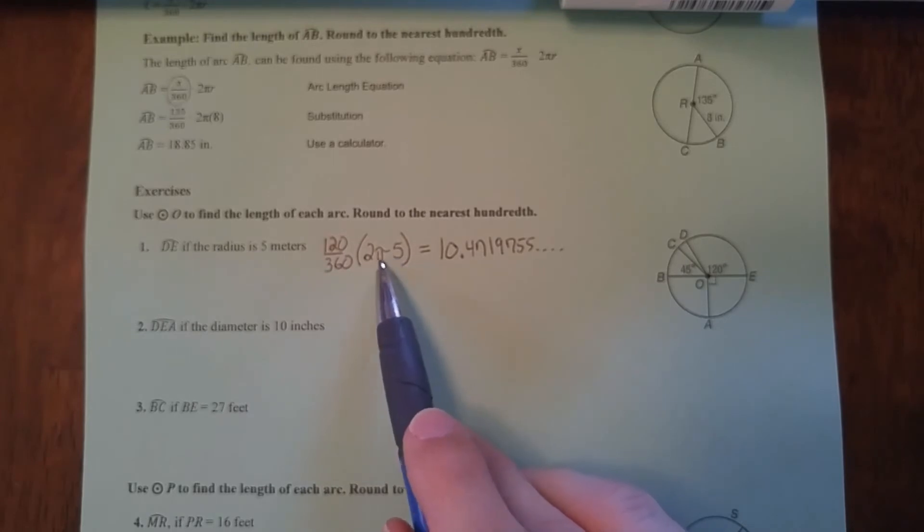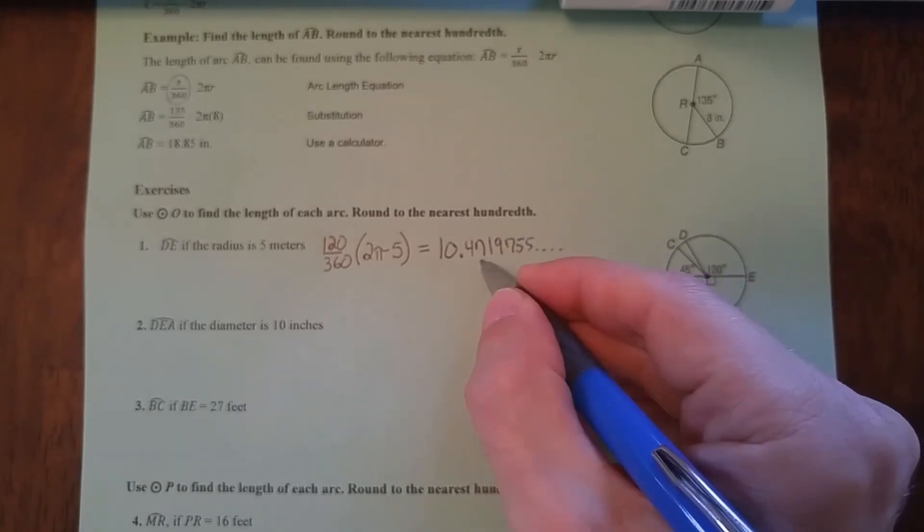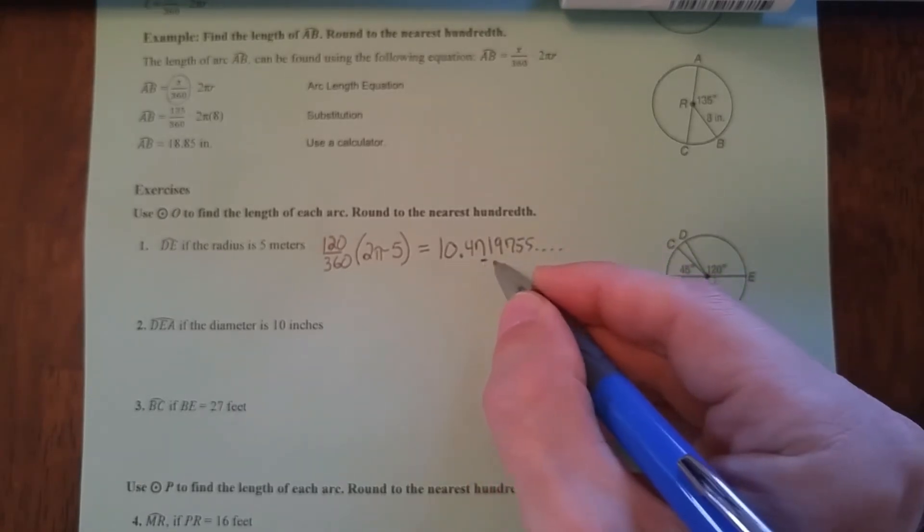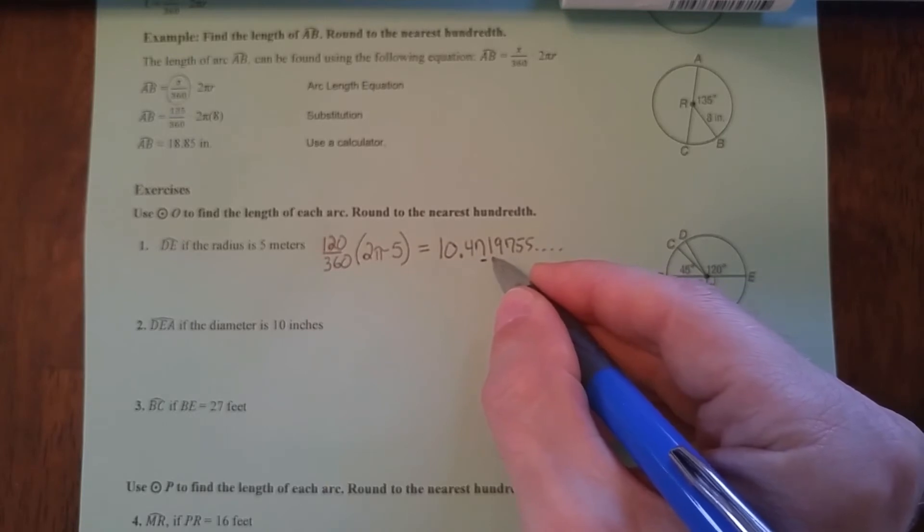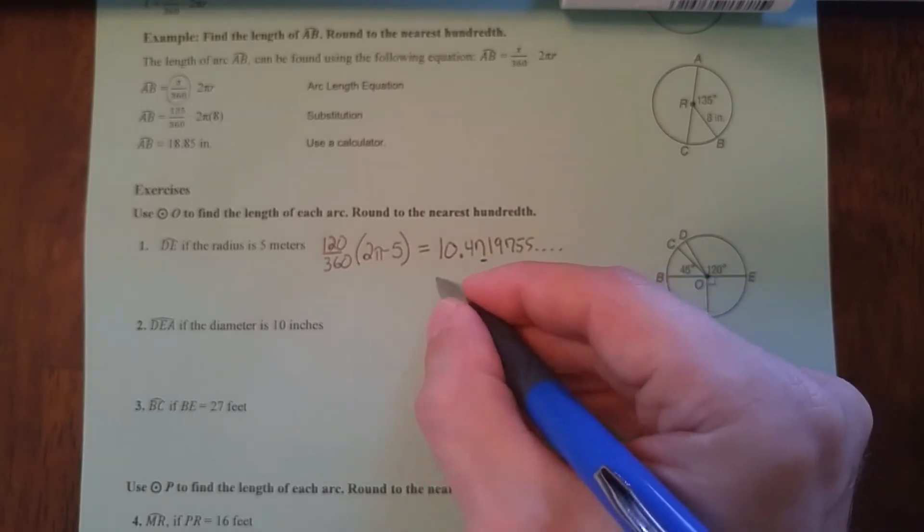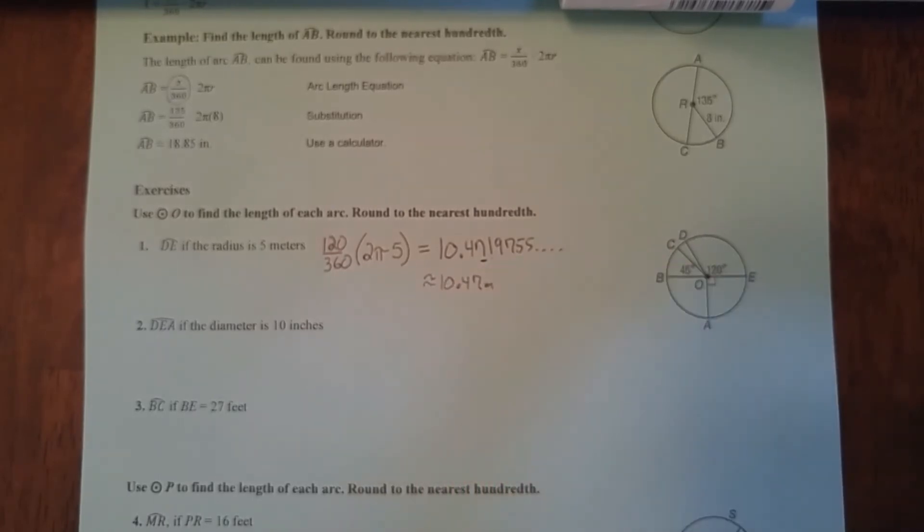If you want to, you could also do 5 times π times 2 times 120, then hit division by 360. It doesn't matter the order. Either way, it says round to the nearest hundredth. Remember the hundredth place is the second digit after the decimal point. So look to the right of that. If this is 5 or more, this goes up by 1. Since it's not, it stays the same. So this is going to be about 10.47 meters.